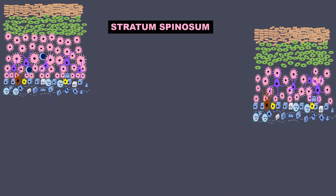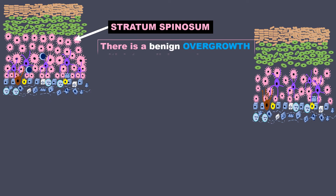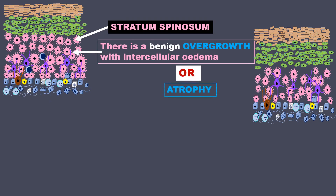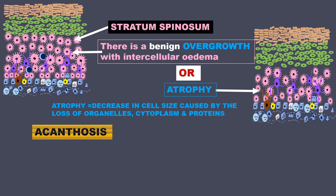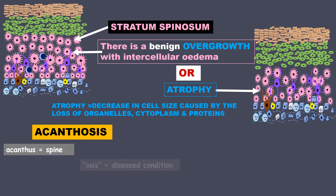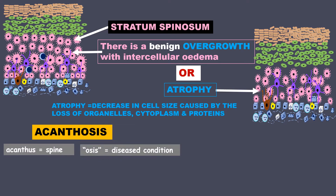The next layer is stratum spinosum. There is a benign overgrowth with intercellular edema or atrophy. Atrophy means decrease in cell size caused by loss of organelles, cytoplasm, and proteins. This is called acanthosis — acantho means spine, and osis means disease condition.